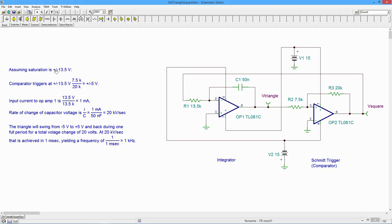So assuming saturation is plus and minus 13.5 volts, which is a fair assumption given 15 volt power supplies, our comparator is going to trigger at that voltage times the ratio of the two resistors, the 7.5K and the 20K. And that's going to work out to plus and minus 5 volts. So when the input signal goes outside that range, plus 5 and minus 5, then this output is going to switch its state.